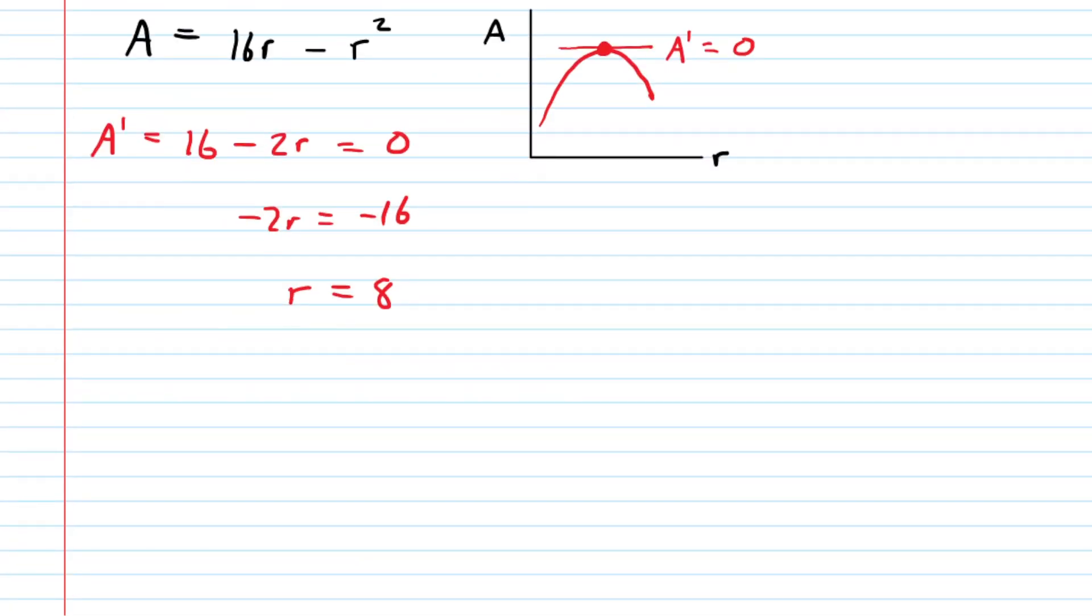And to demonstrate that this value of r actually does yield a maximum, we can do a first derivative test. What we do on a first derivative test is we just plot our critical number on a number line. So in this case, r equals 8.